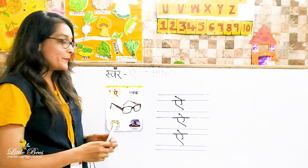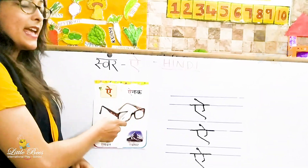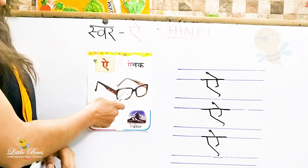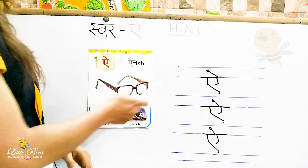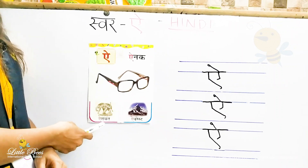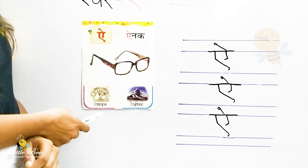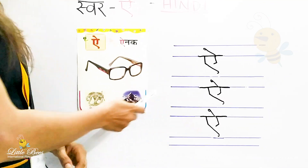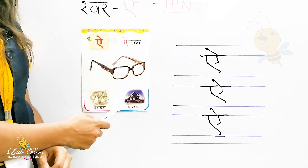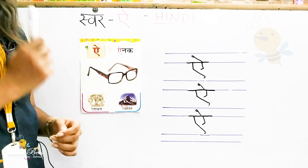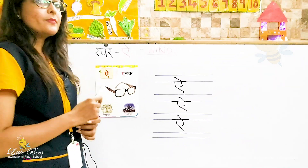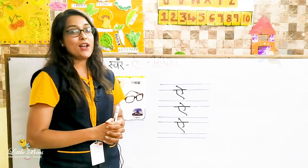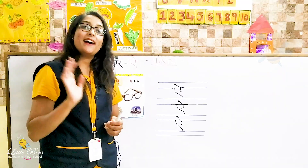So let's repeat it again. Ae say aynak — aynak means spectacles. Ae say airawat — airawat means vehicle of Lord Indra. Ae say Everest — Everest is the highest mountain peak. So hope we are clear with this swar. See you all in the next class. Bye!